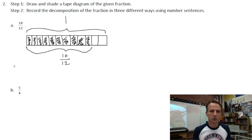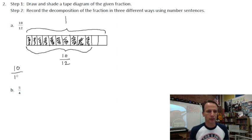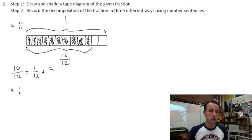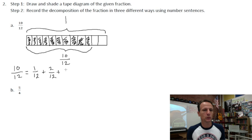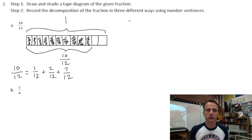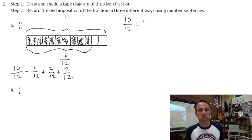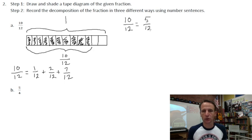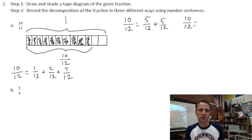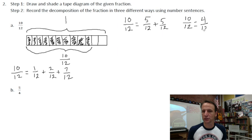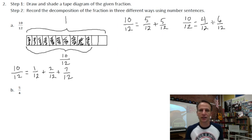I can decompose ten twelfths three different ways. First: one twelfth plus two twelfths plus seven twelfths — since one plus two is three and I need seven more to make ten. Second: five twelfths plus five twelfths, since ten is five and five. Third: four twelfths plus six twelfths, since four and six make ten. Be creative and come up with your own ways!